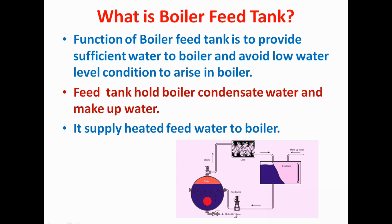Generally this water is hot because condensate water is coming into this tank. If we supply hot water to the boiler, water efficiency increases — because for every six degree rise in feed water temperature, fuel consumption reduces by one percent. This is a thumb rule. This is the function of the feed water tank.